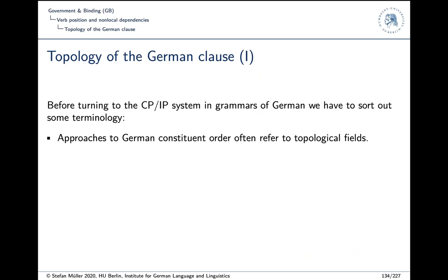Before we can apply that analysis to German, we have to talk about some basic terminology — the topological field model of the German clause. Those of you who read the first chapter of the Grammar Theory textbook already encountered this terminology, since it's relevant to all the series we look at. It's descriptive terminology, but I postponed it in the slides to here since we need it right now and it's good to introduce it now.